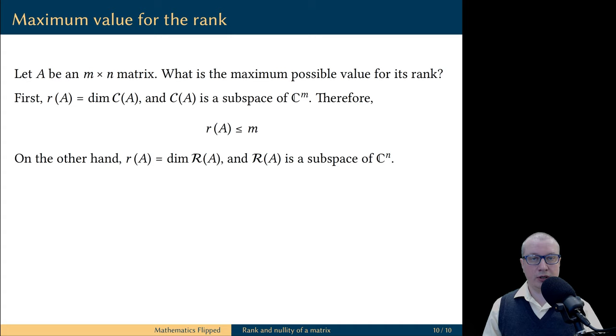The row space of A is a subspace of C^n. The dimension of C^n is equal to n; therefore, the rank of A does not exceed n, the number of columns in the matrix.